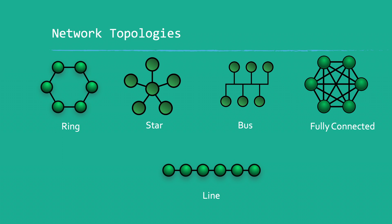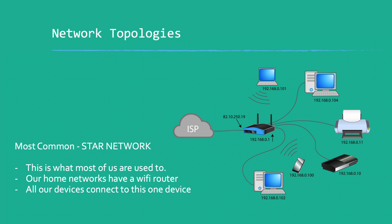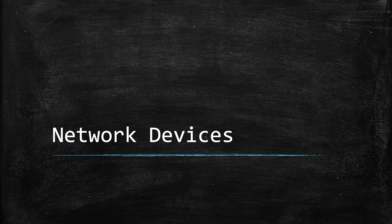A line topology means you have to send data through other hosts to get across the network — it's kind of like ring, but ring comes full circle while line goes in just one direction. There are also tree networks, but we won't get into those. As mentioned, the star network is probably the most common type we're used to, where the Wi-Fi router is generally what we're all connected to on our home networks.